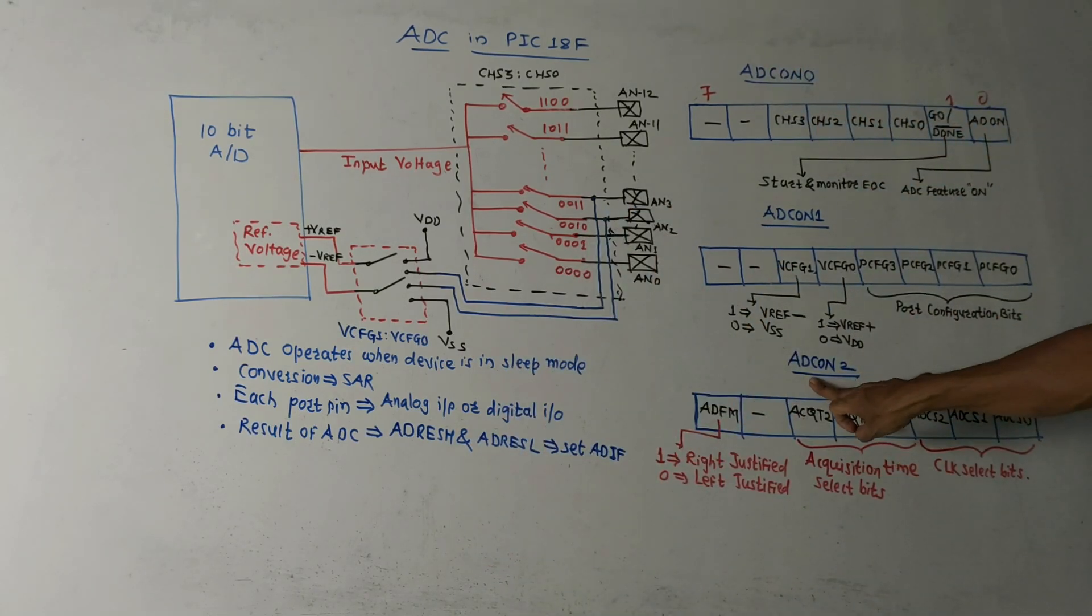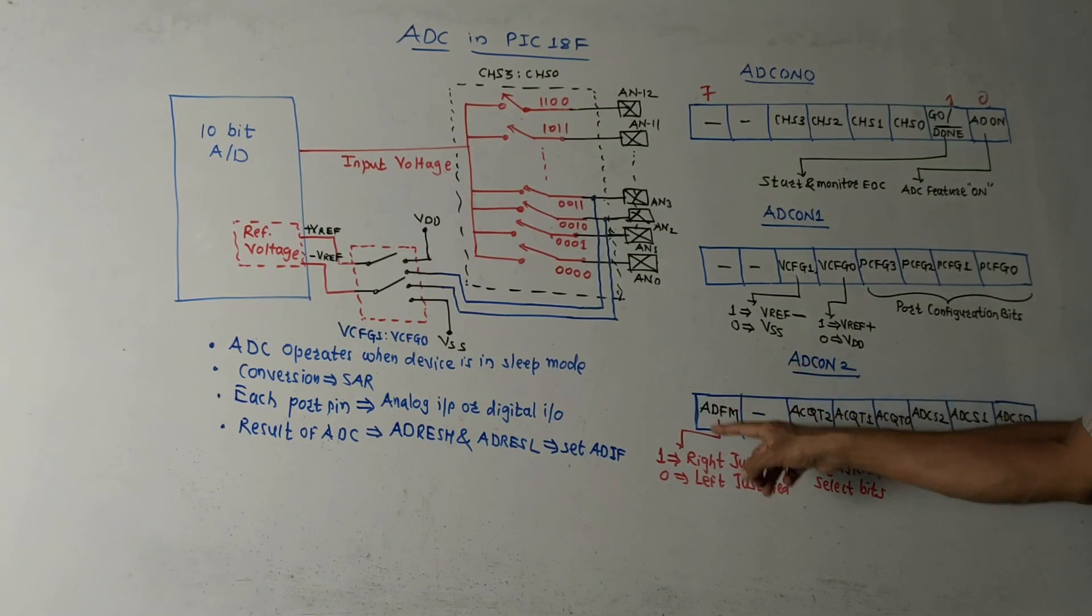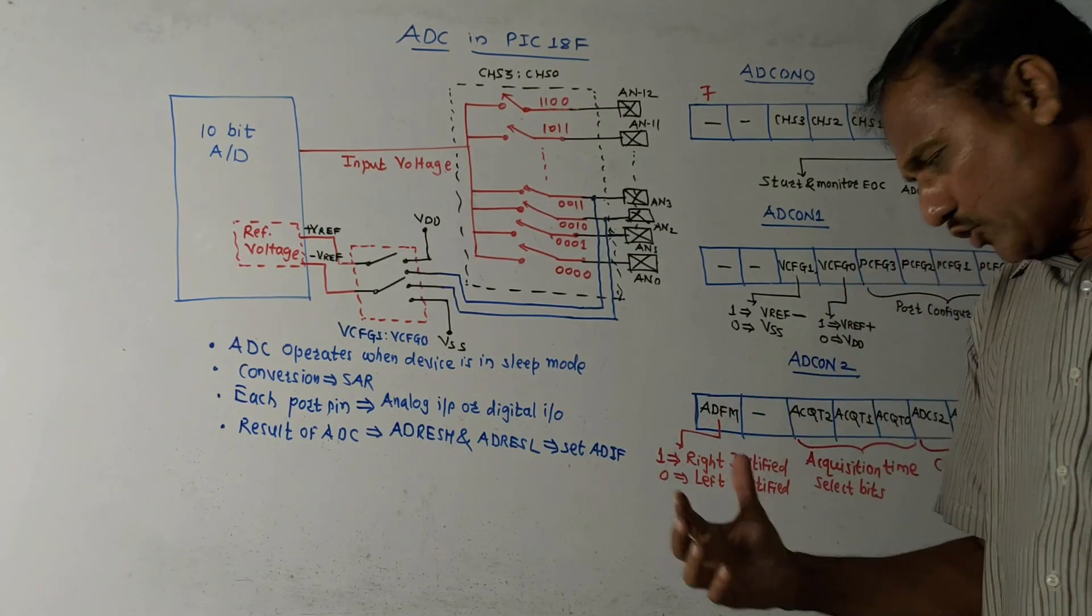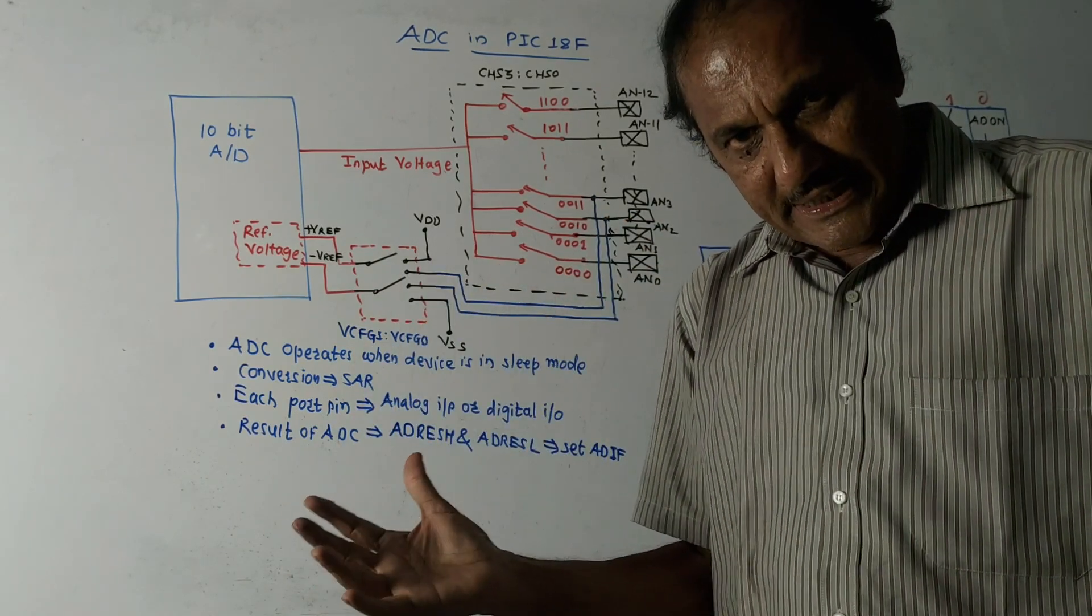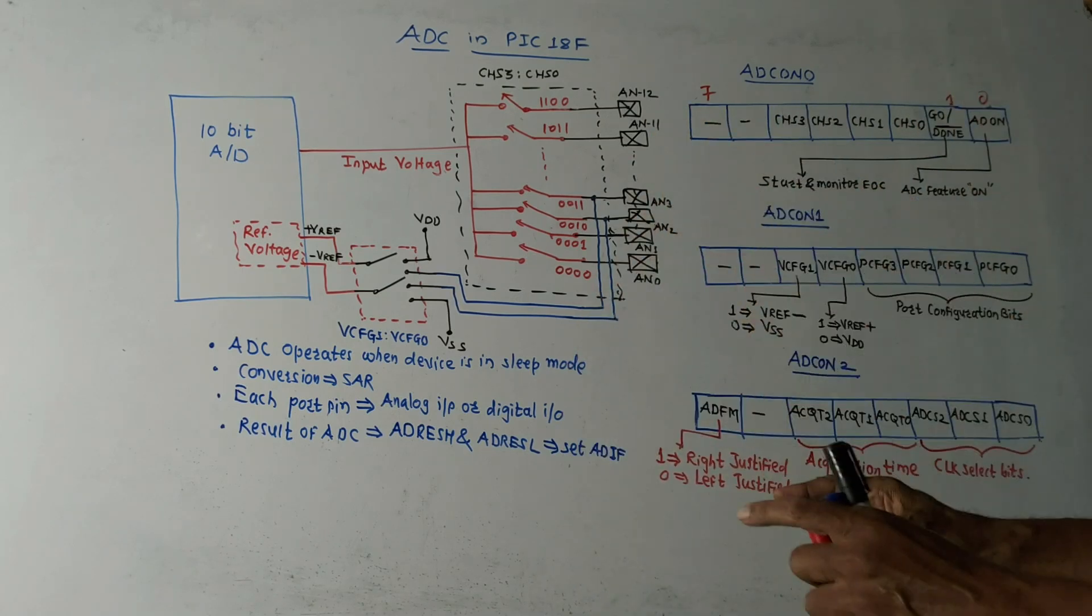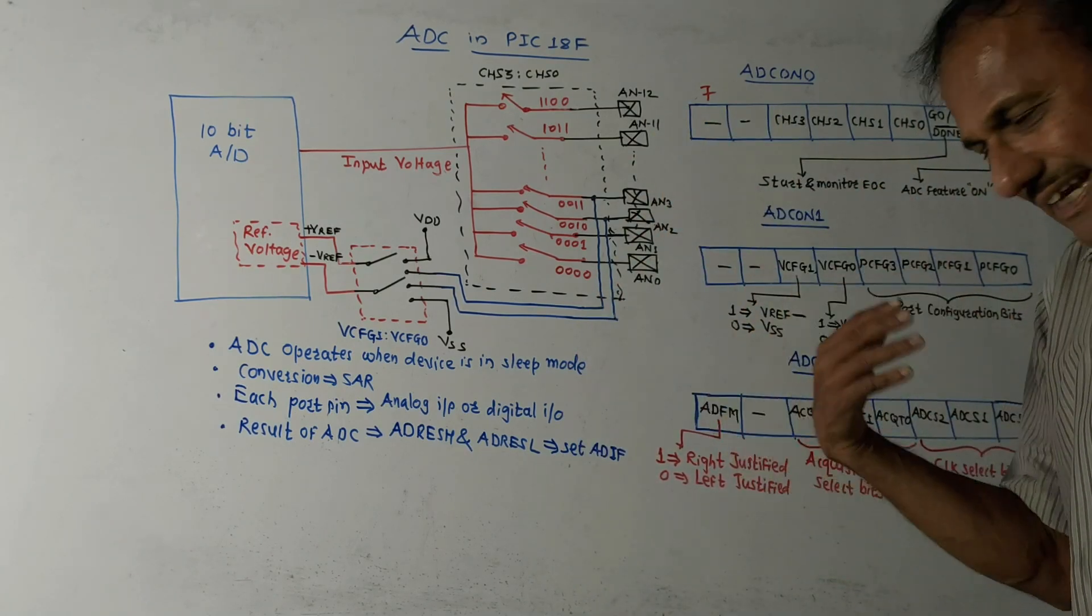Next is ADC control register two. So this control register is basically used to control the acquisition time of the ADC and it is also used as clock select bits.